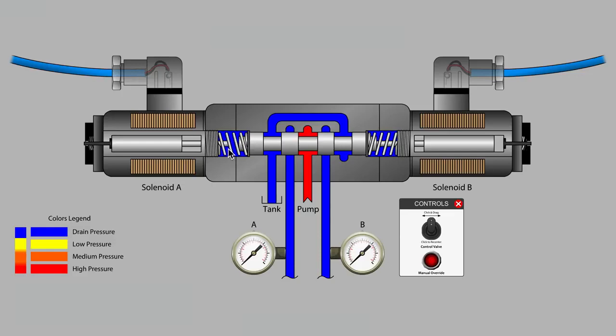When we energize solenoid A, the armature and pushpin get a running start against the spool as this gap is closed.